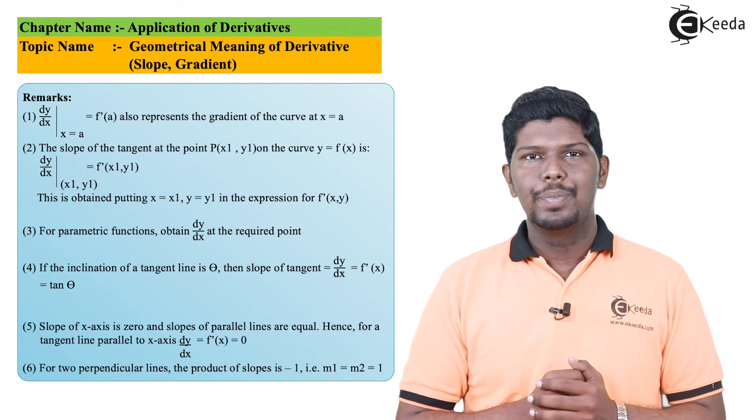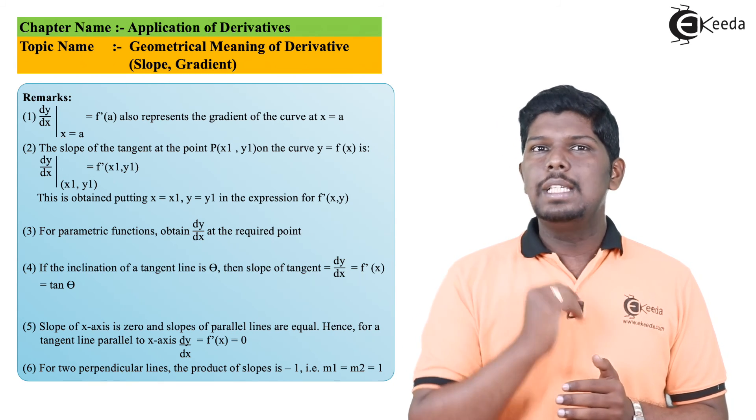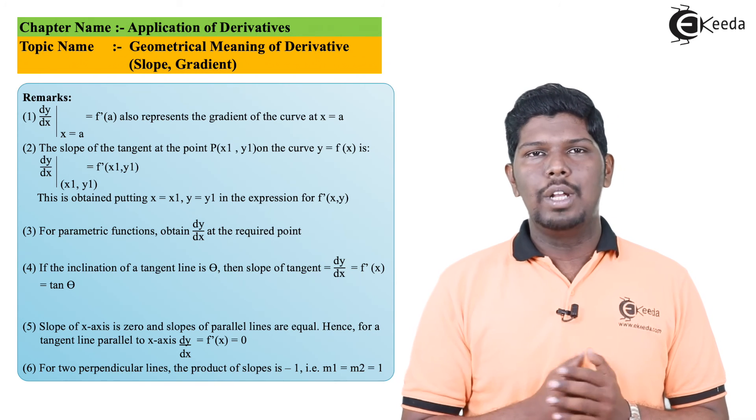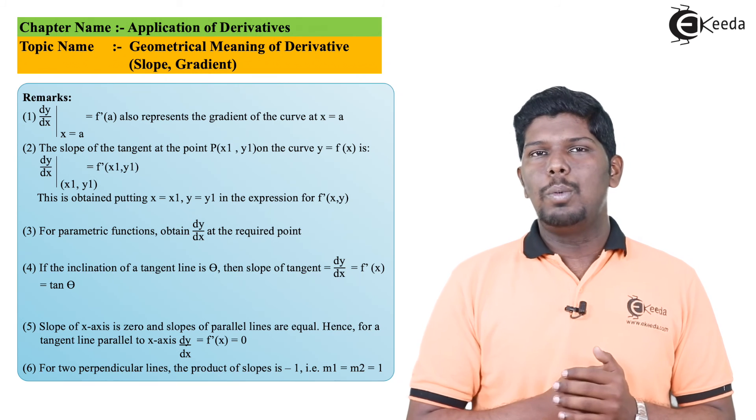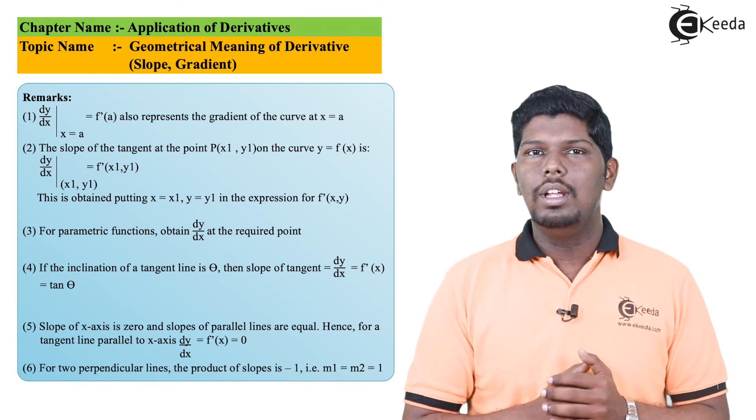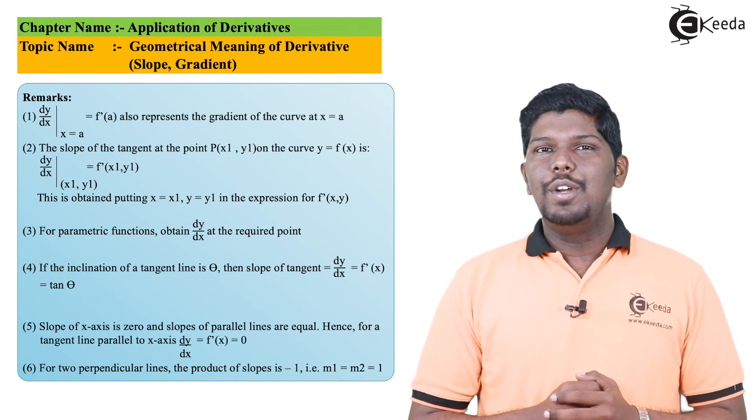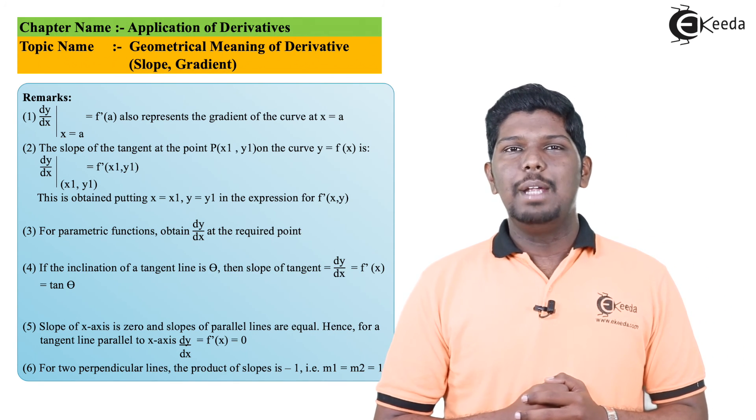Now what is negative reciprocal? If I say the slope of tangent is 2, therefore the slope of normal will be reciprocal of 2, will be 1/2, and its negative sign will give you -1/2. So if you find the slope of tangent, its negative reciprocal will be the slope of normal. I hope friends you have understood this video. Thank you for watching this video. Stay tuned with iKeda and subscribe to iKeda.